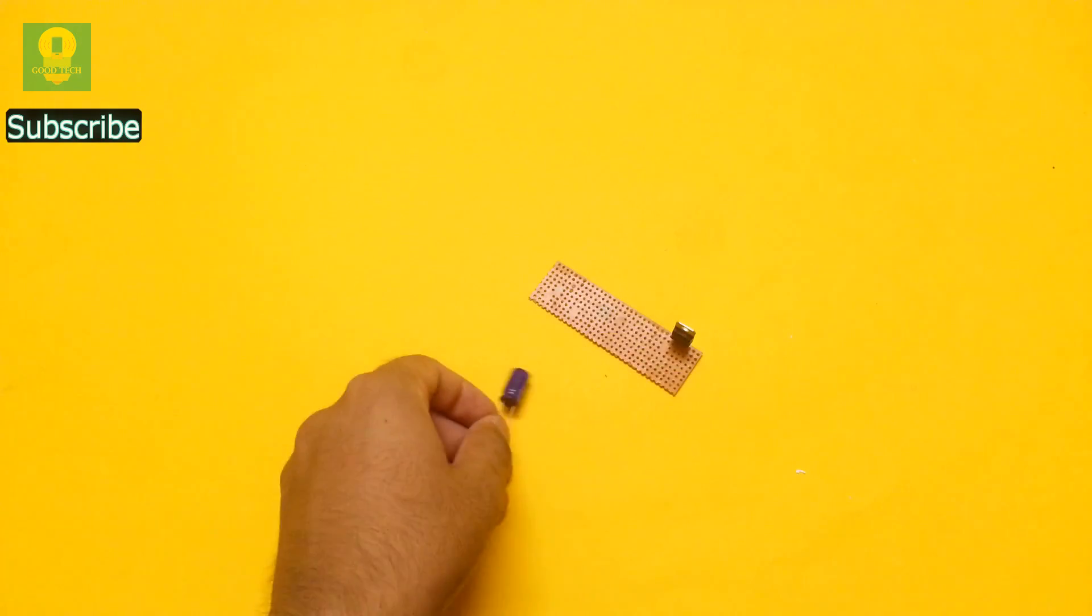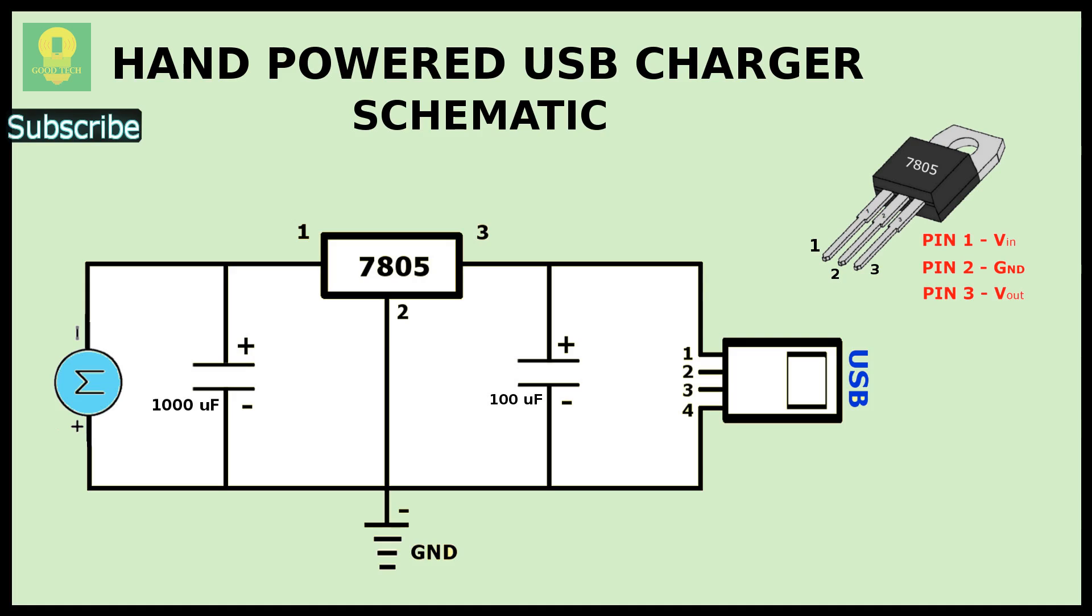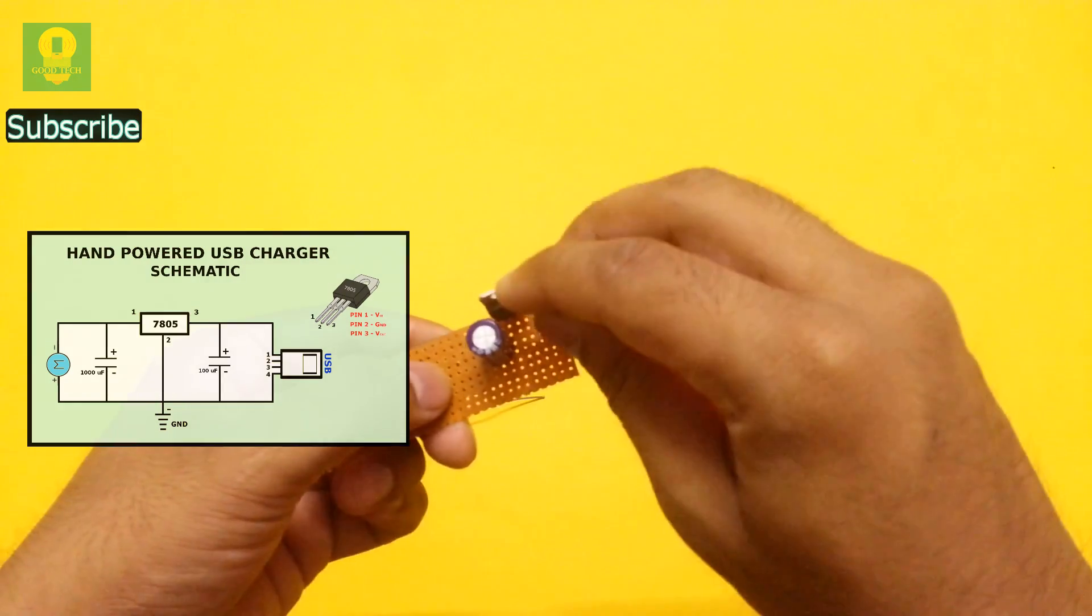Take a 1000 and a 100 microfarad capacitor. Refer to the schematic and pin configuration of 7805 IC. Insert and solder the 1000 microfarad capacitor to the input pin of 7805.